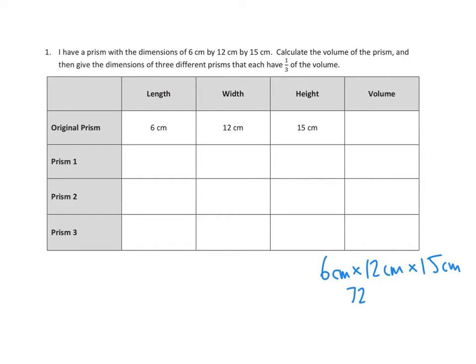So 6 times 12 is 72 square centimeters times 15 centimeters. I'm going to have to do 72 times 15 here on the side. 5 times 2 is 10. 5 times 7 tens is 35 tens plus 1 more is 36 tens. 1 ten times 2 is 2 tens, and 1 ten times 7 tens is 700. And if I add those partial products, I get 1,080 cubic centimeters.